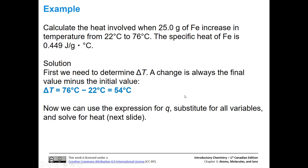The first thing we need to determine is our change in temperature, because that's going to give us part of our answer. The temperature change is always going to be the final value minus the initial value. So in this case, it's going to be 76 degrees C minus 22 degrees C, and that's going to give us a delta T of 54 degrees C. Now that we have delta T, let's go ahead and plug everything into our equation for Q.